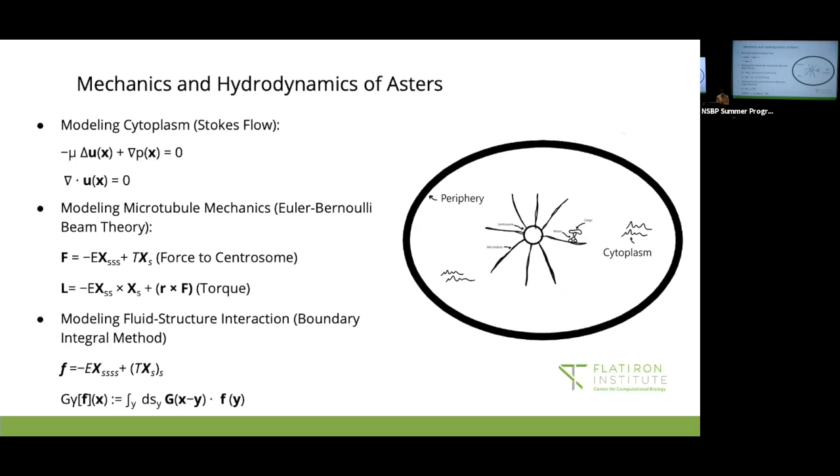Then we can also... We want to model the way the microtubules in the cytoplasm interact. And to do this, we can use the boundary integral method. So we have force per unit length, which is the small f there. And then we can also use Green's function for flow, which is the g down here, where g is like the velocity.